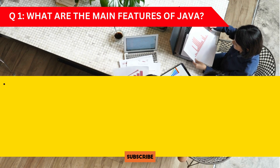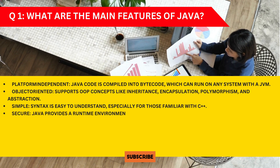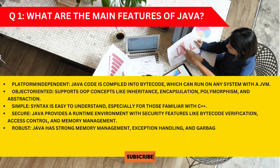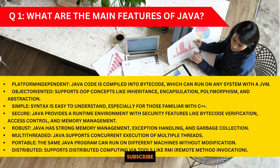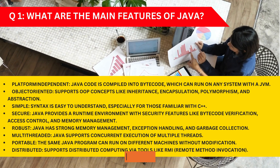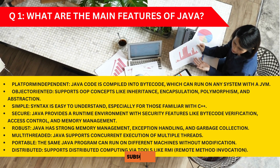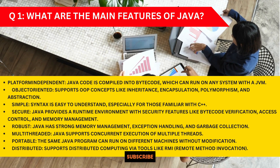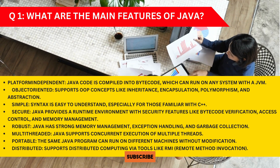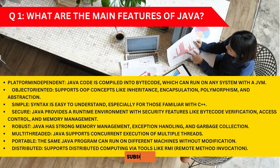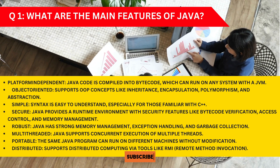Question 1: What are the main features of Java? This is mostly asked in Java technical interviews for freshers or five to ten years of experienced candidates. The answer is: Java is multi-threaded, portable, distributed, simple, secure, and robust. When stating these features, make sure you know what they mean — for example, Java is distributed means it supports distributed computing via tools like RMI, that is Remote Method Invocation.